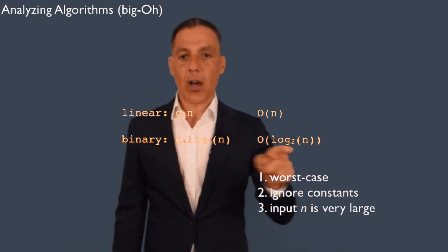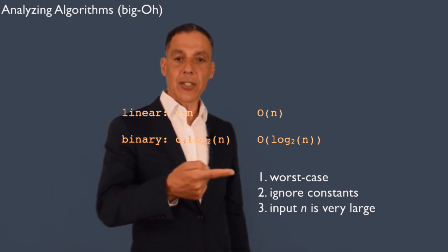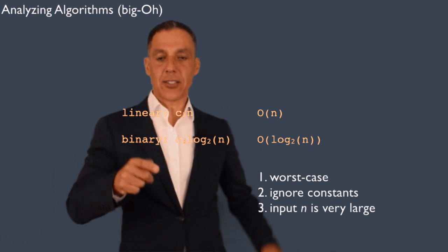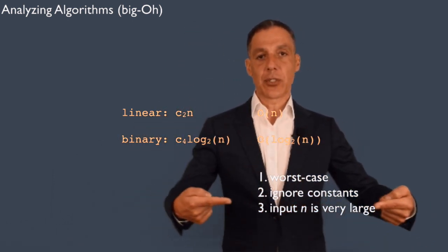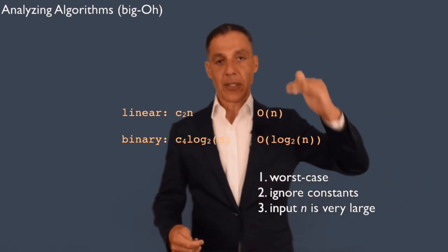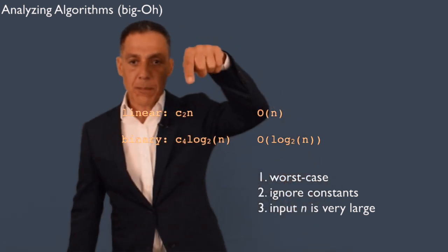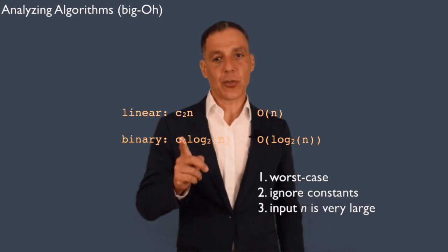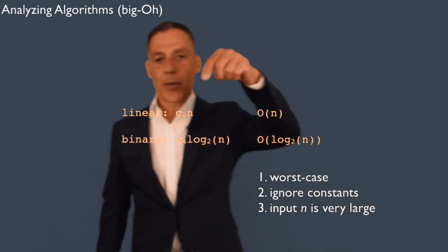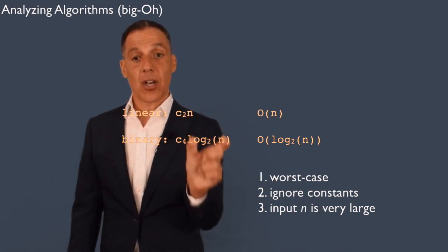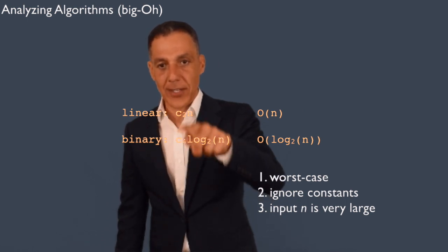Binary search is big O of log n. Notice that these constants have dropped off. When we write big O notation, we are doing a couple of things: telling you the worst case, and ignoring constants — both fixed and multiplicative — because we assume the analysis is for when n gets very, very large. The difference between constant terms and the dominant terms is relatively small compared to n and log n when looking into the limits.